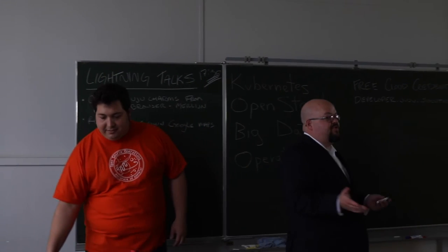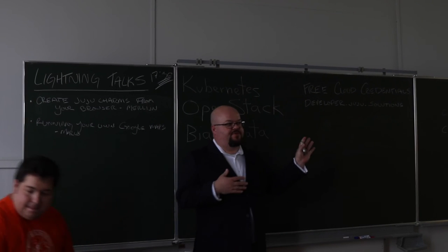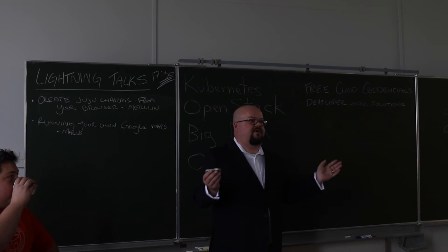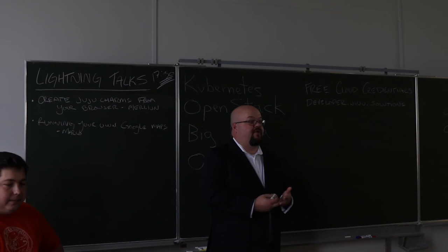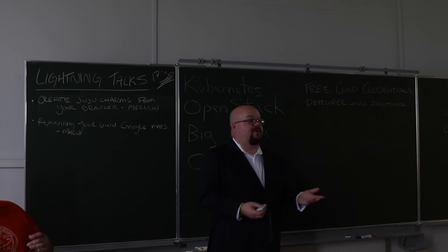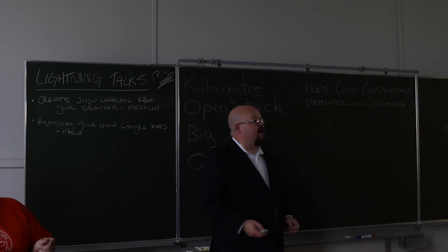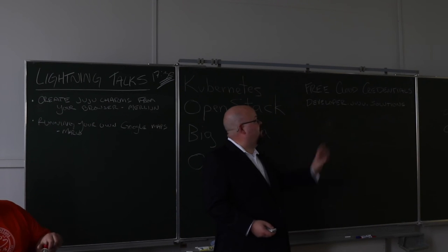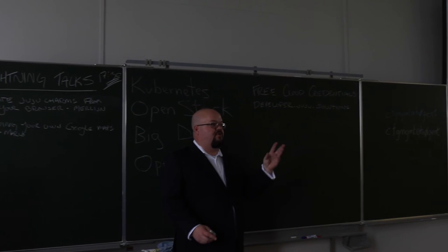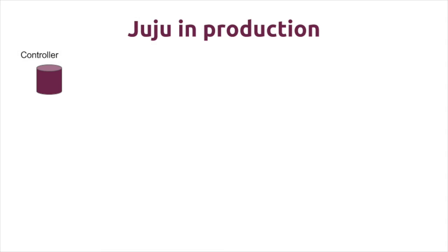If you want to get started with Juju today, grab the Juju command, bootstrap, and pick your cloud of choice — locally with LXD, MAAS for bare metal, or any supported public cloud. But this means getting yourself a controller, which is your control plane for Juju. It tracks all state, and you have many models in that controller. But for production use, you want to make sure that controller is HA, because your control plane can't go down.